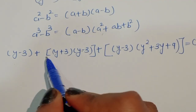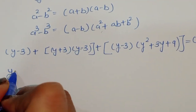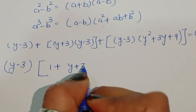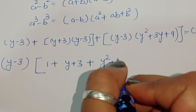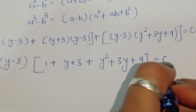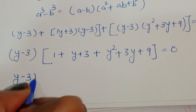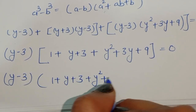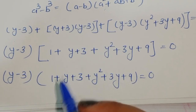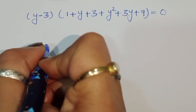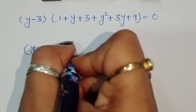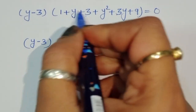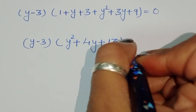Now we have (y minus 3), (y minus 3)(y plus 3), and (y minus 3)(y square plus 3y plus 9). We can take (y minus 3) as common factor, giving us (y minus 3) times [1 plus (y plus 3) plus (y square plus 3y plus 9)] equals 0. Simplifying inside the bracket: y square plus 3y plus 3y plus y plus 3 plus 9 plus 1, which gives y square plus 4y plus 13. So we have (y minus 3)(y square plus 4y plus 13) equals 0.